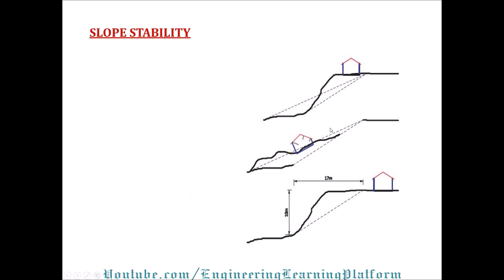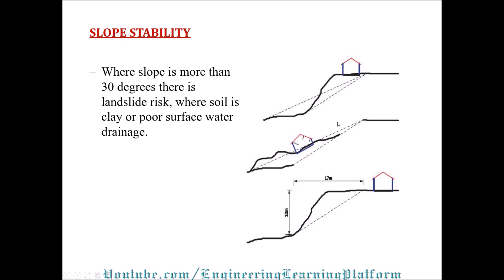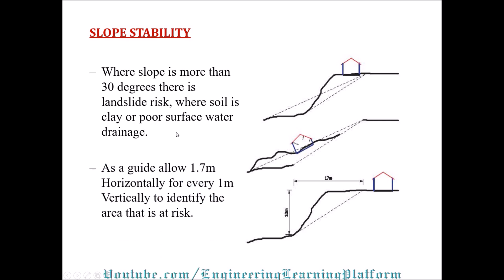As a structural engineer, we have to consider slope stability as an important factor when designing a structure. When the slope is more than 30 degrees, where there is land at risk, where soil is clay or poor surface water drainage, as a guide allow 1.7 meters horizontal for every 1 meter vertical to identify the area that is at risk.